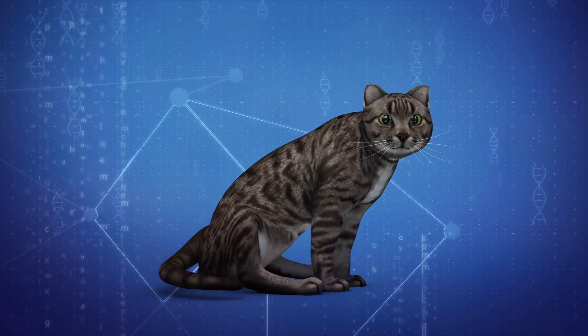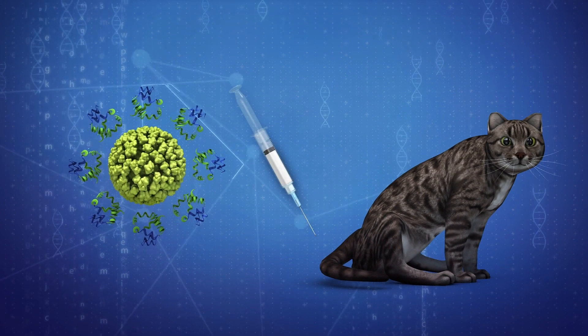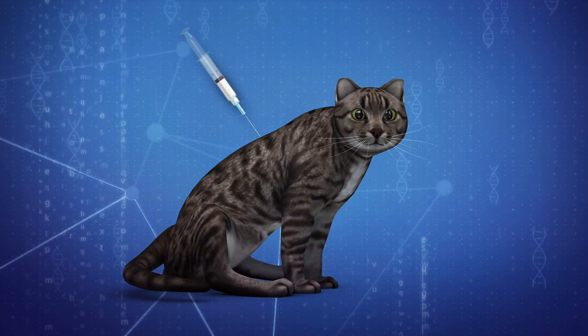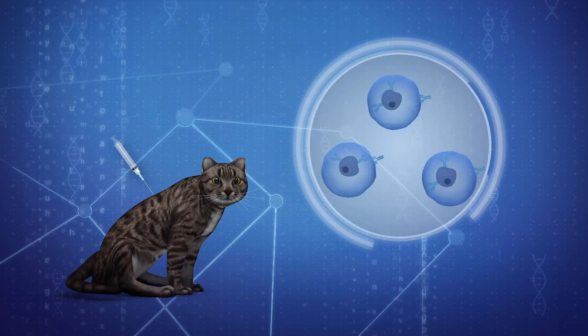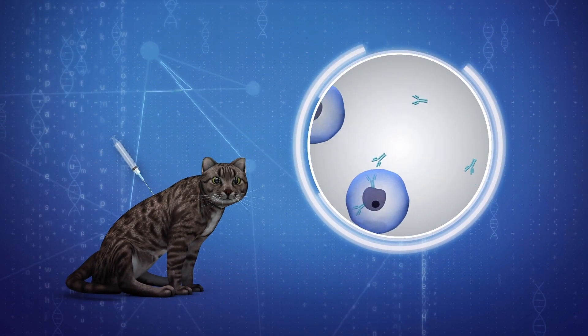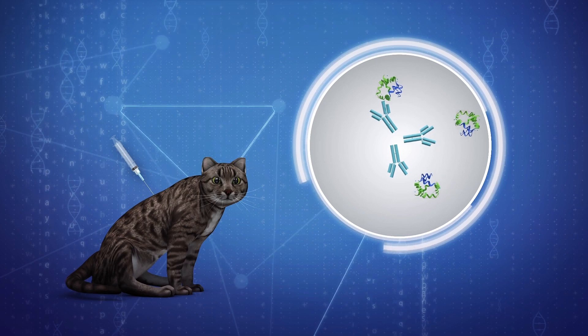According to a news release from Hypopet, scientists in Zurich have developed a vaccine which, when injected into a cat, instructs the immune system to produce antibodies that target and destroy the Fel-D1 protein.